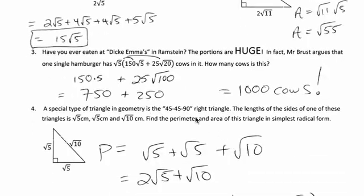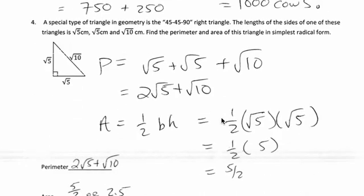Number three, this is a real life problem. Mr. Bruss loves cows and he loves hamburgers. And he would argue that one hamburger has a thousand cows. That's what you should get there after you distribute. A thousand cows.